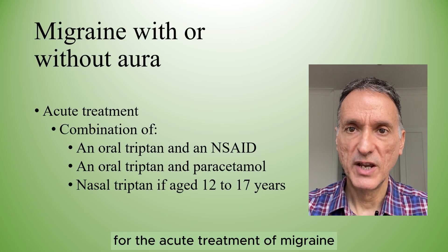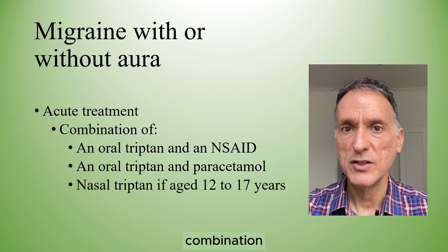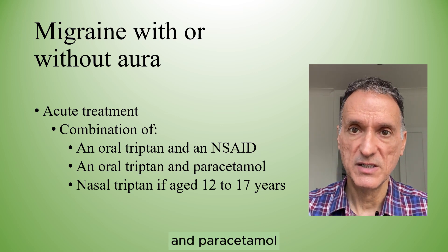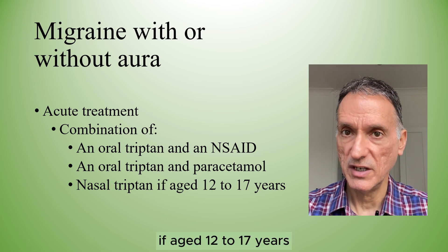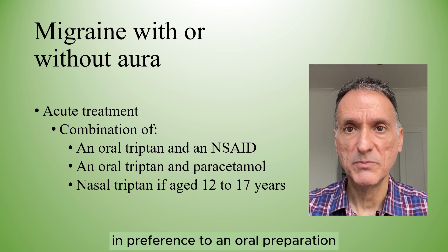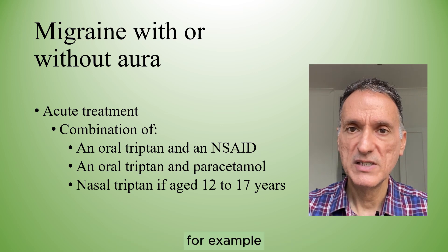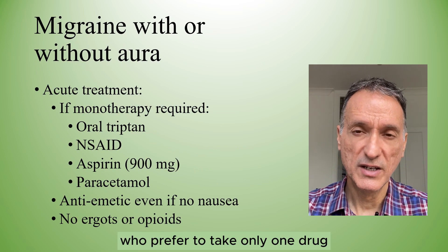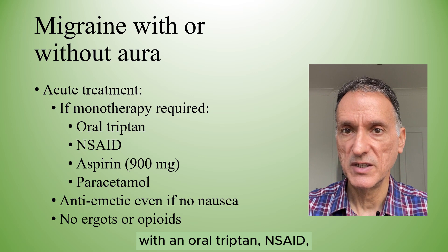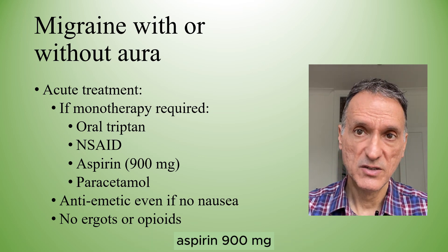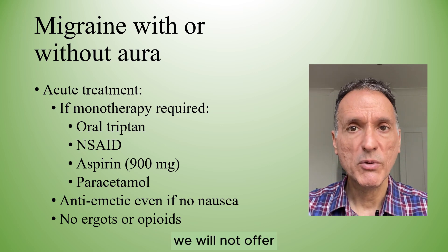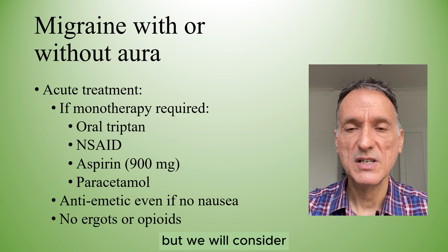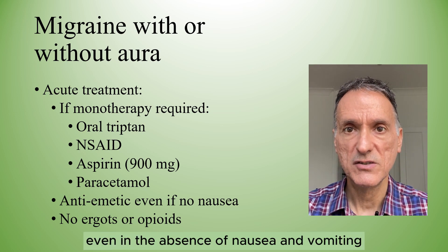For the acute treatment of migraine with or without aura, we will offer a combination of an oral triptan and an NSAID, or an oral triptan and paracetamol. If aged 12 to 17 years, we will consider a nasal triptan in preference to an oral preparation, for example nasal sumatriptan. For people who prefer to take only one drug, we will consider monotherapy with an oral triptan, NSAID, aspirin 900 mg or paracetamol. We will not offer ergots or opioids for the acute treatment of migraine, but we will consider an additional antiemetic even in the absence of nausea and vomiting.